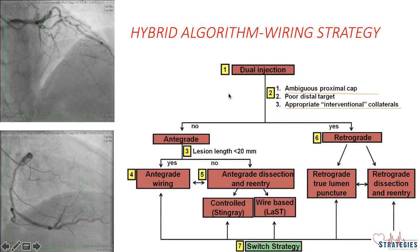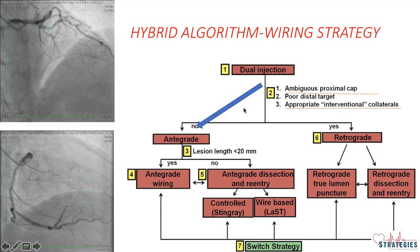Coming to the analysis of wiring strategy for this case keeping the hybrid algorithm in mind, we have not used dual injection as bridging collaterals are filling distally nicely. We took only left injection and there is an ambiguous cap with a good interventional collateral coming from RCA and distal target is okay. In this situation we can try antegrade because it is a short lesion. Success of antegrade wiring will be quite high, but to identify the entry point we may have to use intravascular ultrasound. We will wire with IVUS guidance, and once the wire goes true to true that is the end of the procedure, but if the wire goes true to false then we may have to use alternative ADR techniques to complete the procedure.